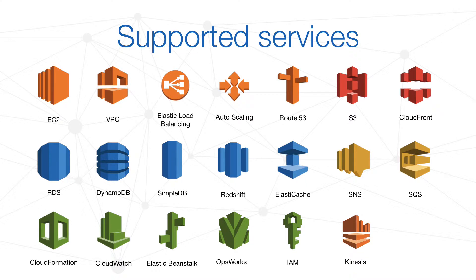Amazon is updating the list of AWS-supported resources and operations monthly, and right now the following services are fully or partially supported: EC2, VPC, ELB (Elastic Load Balancing), Autoscaling, Route53, S3, CloudFront, RDS, DynamoDB, SimpleDB, Redshift, ElastiCache, SNS (Simple Notification Service), SQS (Simple Queue Service), CloudFormation, CloudWatch, Elastic Beanstalk, OpsWorks, IAM, and Kinesis.